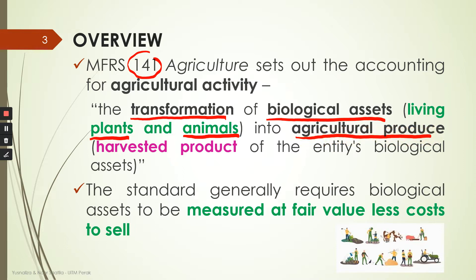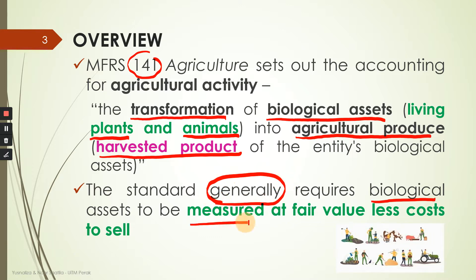We are also looking at the transformation of biological assets into agricultural produce. For example, the flower is the produce coming from the plant, and milk is the agricultural produce of the dairy cow — these are called harvested products. For measurement, biological assets are generally required to be measured at fair value. MFRS 141 says you must use fair value unless it is not reliably available, in which case you can measure using cost.